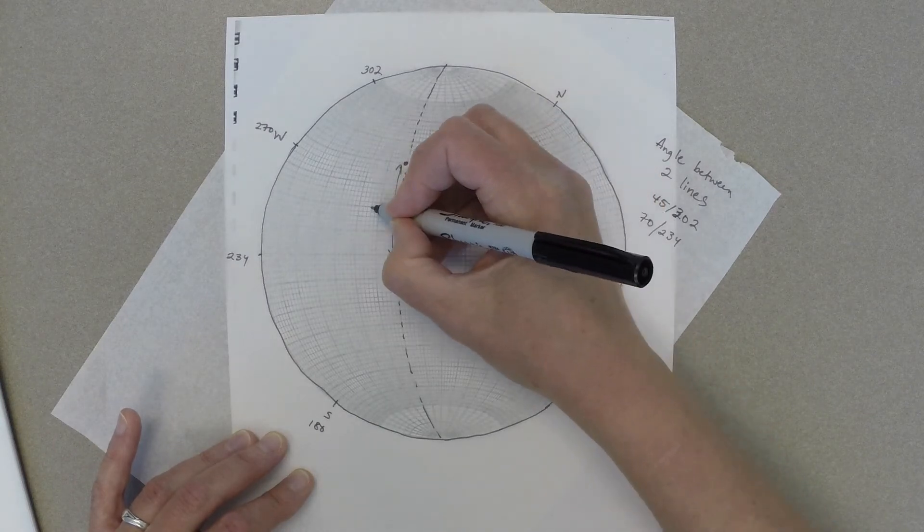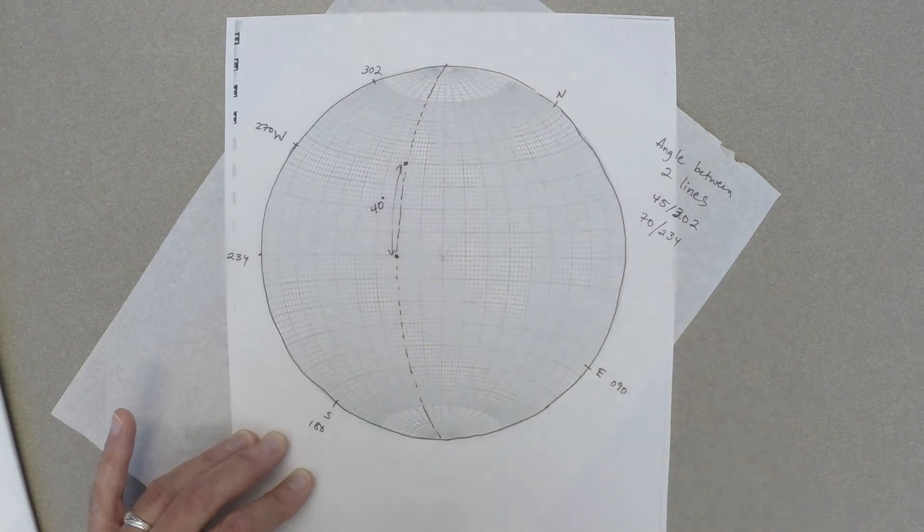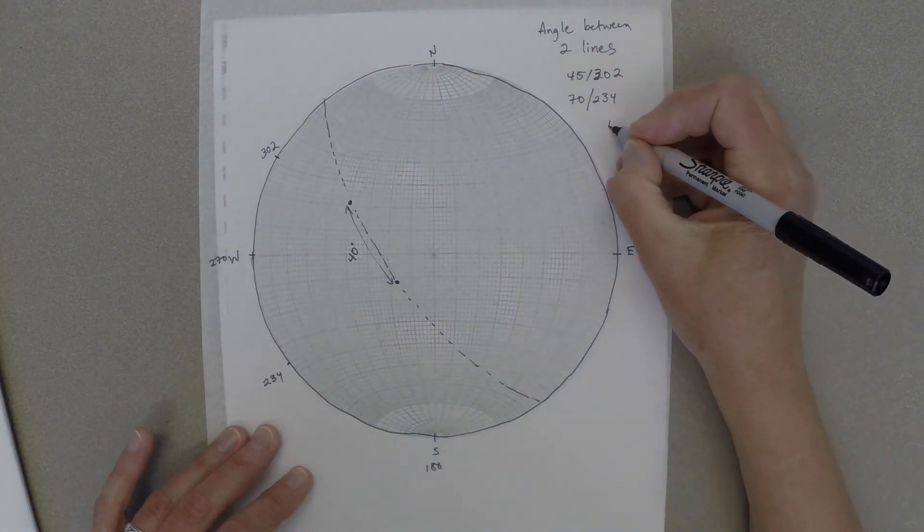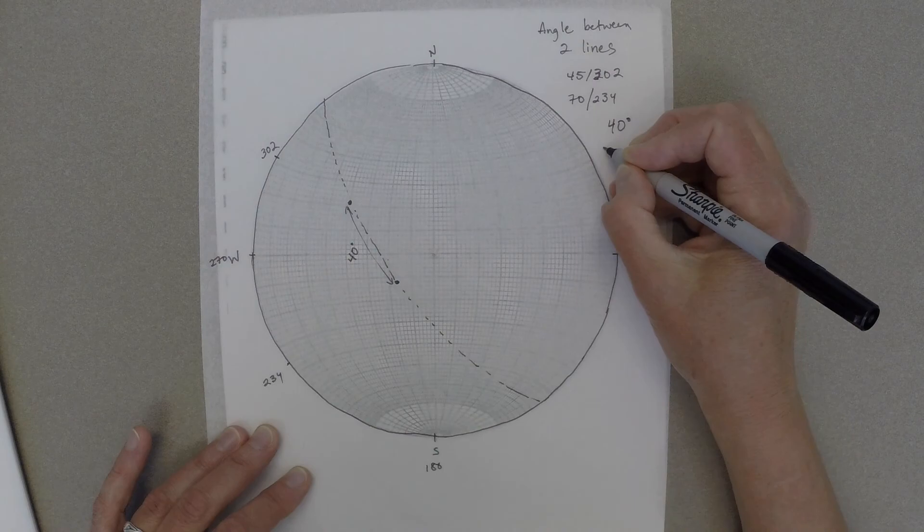So that angle is 10, 20, 30, 40 degrees. The angle between those two lines is 40 degrees.